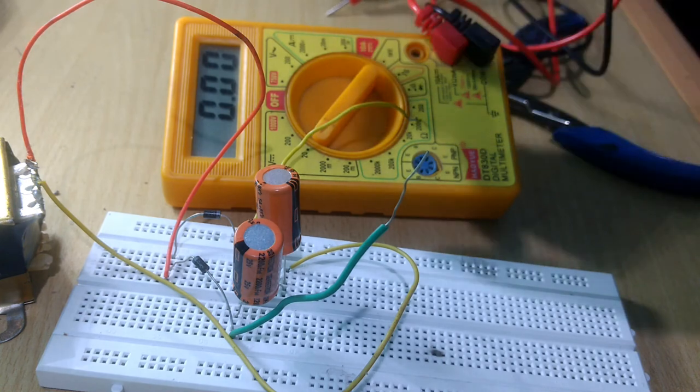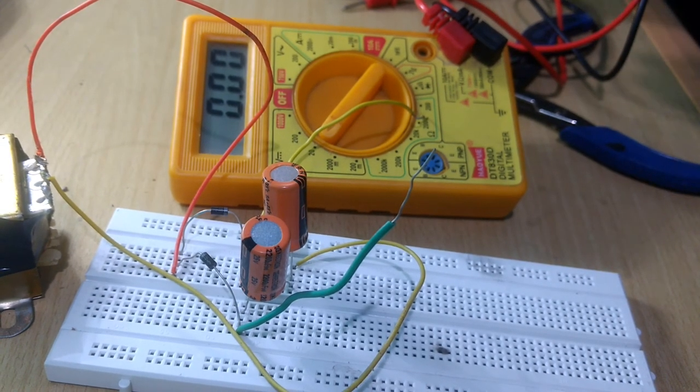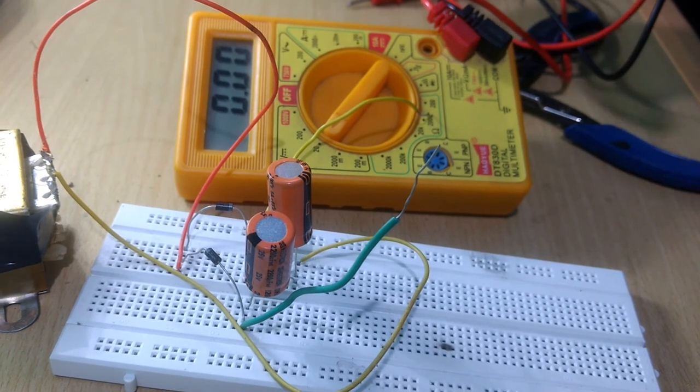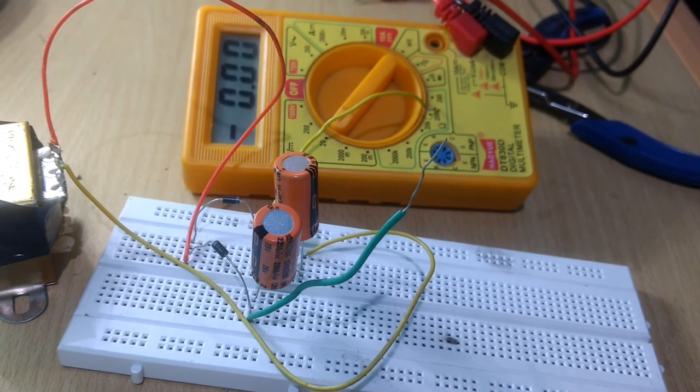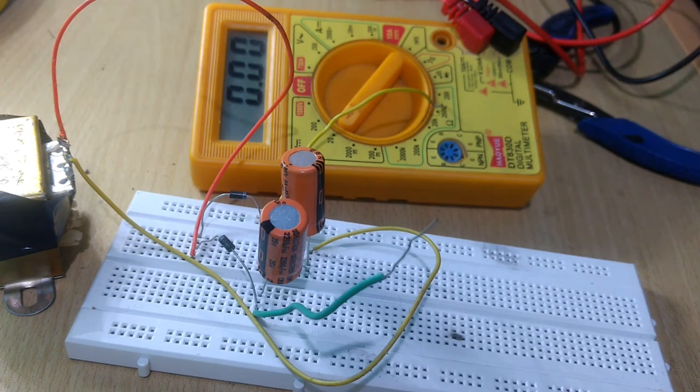So this was the function of a voltage multiplier. This was a voltage doubler. Similarly, we can make a voltage tripler, a voltage quadrupler, and we can go on increasing the number of capacitors, and thus the multiples will also keep on increasing.